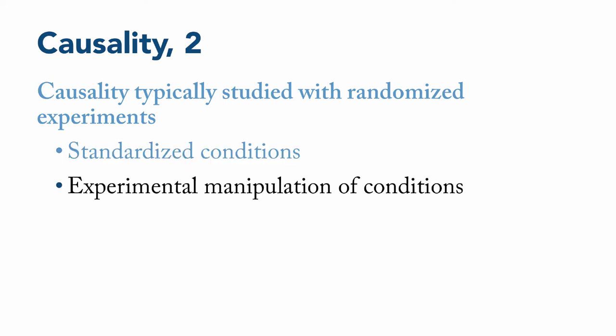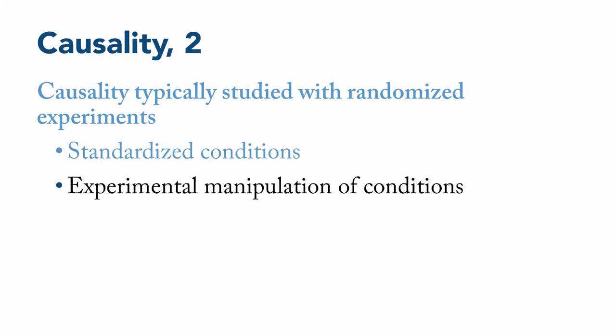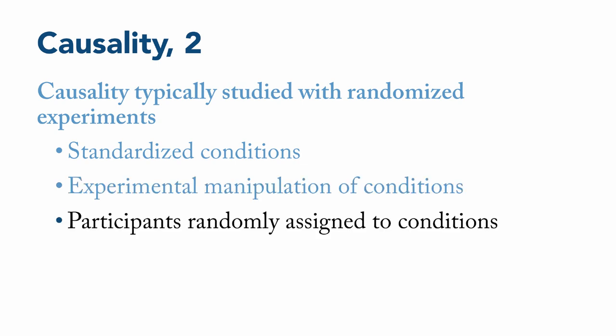Second, you need experimental manipulation of conditions. That is, you need to be the one who creates the differences between the groups of people, such as giving patients one kind of medicine or another, or giving groups of students one kind of curriculum or another. Most often, the participants are randomly assigned to conditions. This is important because the process of randomization creates something called probabilistic equivalence, which means that different groups are likely to be similar as a whole on nearly any variable that you measure, assuming that your groups are large enough.